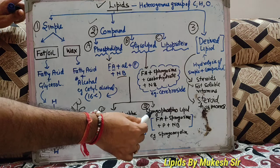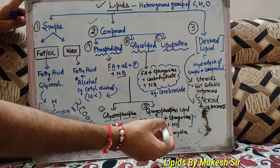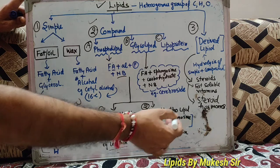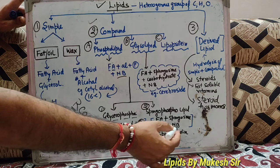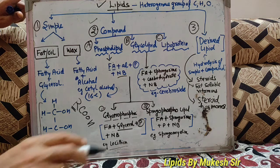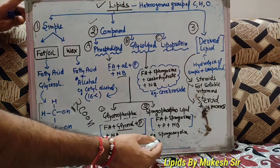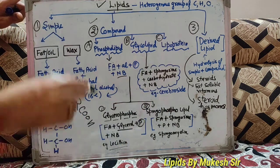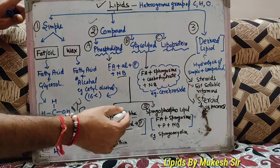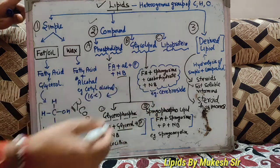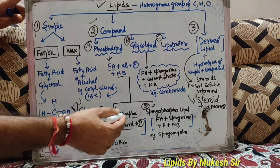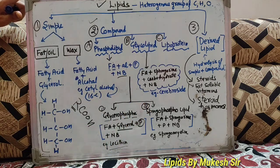दूसरा जो phospholipid है that is sphingophospholipid. Sphingophospholipids में क्या होगा — fatty acid होगा, इसमें sphingosine होगा (alcohol), phosphate होगा, और nitrogenous base होगा. Example इसमें किसका आएगा — sphingomyelin is an example of sphingophospholipid. तो phospholipids हमारे दो types के होंगे: एक glycerophospholipid और दूसरा sphingophospholipid.